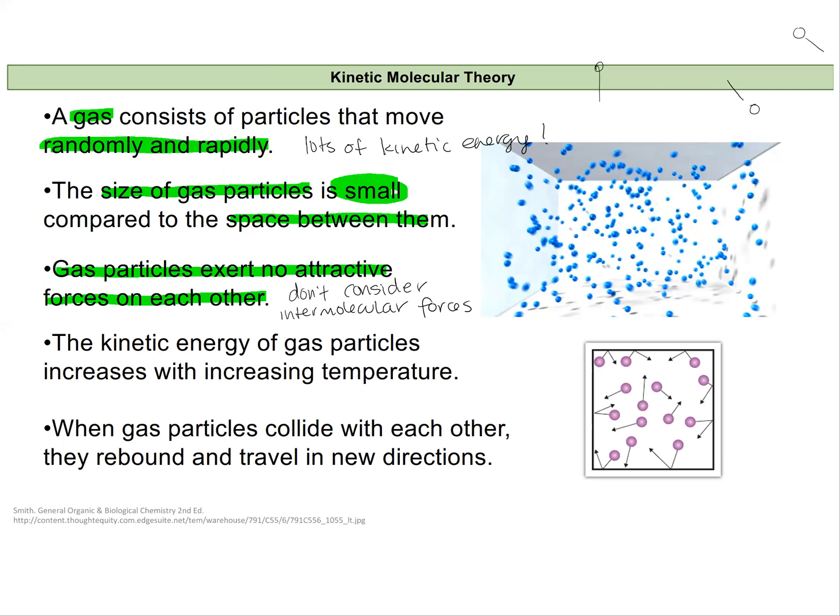The next part of kinetic molecular theory states that kinetic energy of gas particles will increase with increasing temperature. So as I increase my temperature of my gas, they will have more kinetic energy, which means they can move faster. Kinetic energy, remember, is the energy of motion.